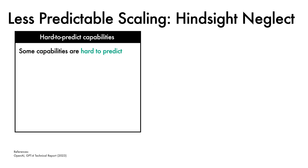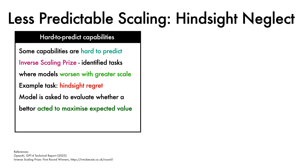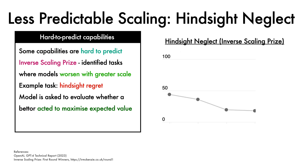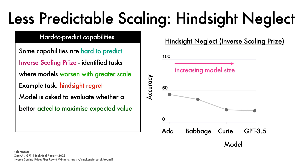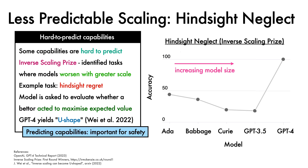Some capabilities are hard to predict. The recent inverse scaling prize identified tasks where model performance worsens with increasing scale. An example of such a task is hindsight regret, in which a model is asked to evaluate whether an agent acted to maximize their expected value, while ignoring whether they were lucky in the result. Here is the performance on the hindsight regret task for previous GPT variants, with models ranging from the smaller ADA up to the larger GPT-3.5 on the x-axis, and accuracy on the y-axis. As predicted by the inverse scaling law, accuracy gets worse for larger models. However, GPT-4 reverses this trend and instead yields a u-shaped curve, an effect also noted by Wei et al. in experiments with the larger PaLM models. The authors note that accurately predicting future capabilities will be important for safety going forwards, and as such, they plan to register capabilities predictions before training large models in future.